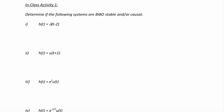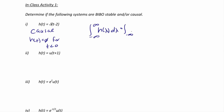Let's look at some examples. Determine if the following systems are BIBO stable and/or causal. If the impulse response is delta(t minus 2), we can say the system is causal because h(t) equals zero for t less than zero. To check BIBO stability, the integral from negative infinity to positive infinity of delta(lambda minus 2) d-lambda equals 1, which is finite. So this system is also BIBO stable.